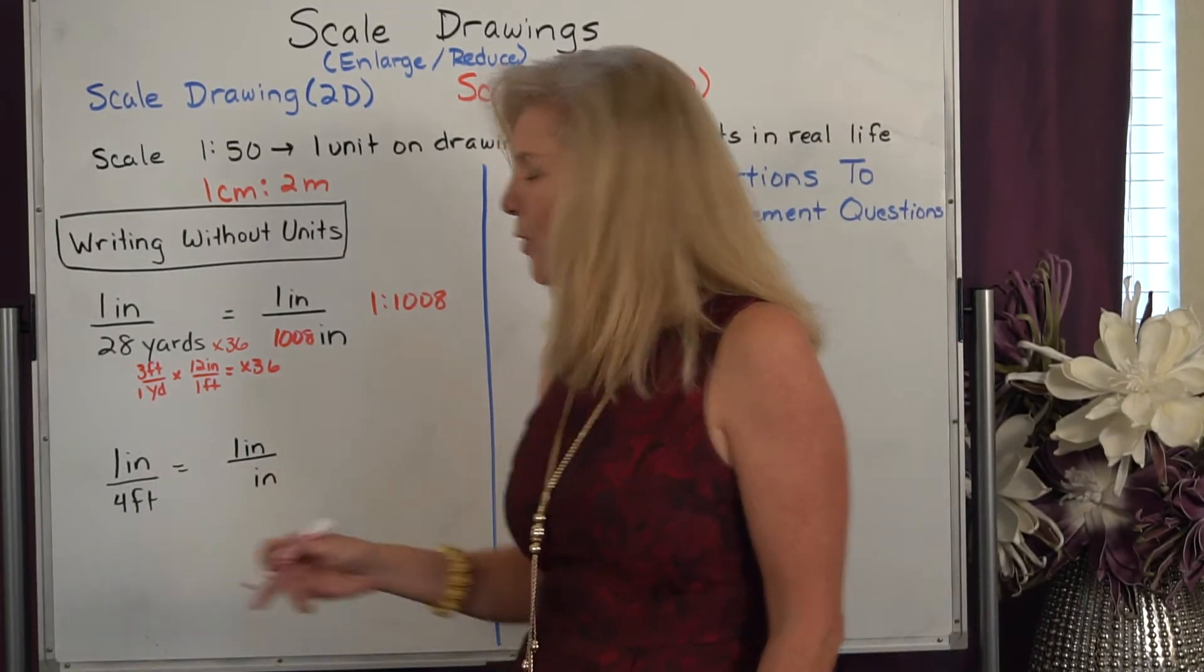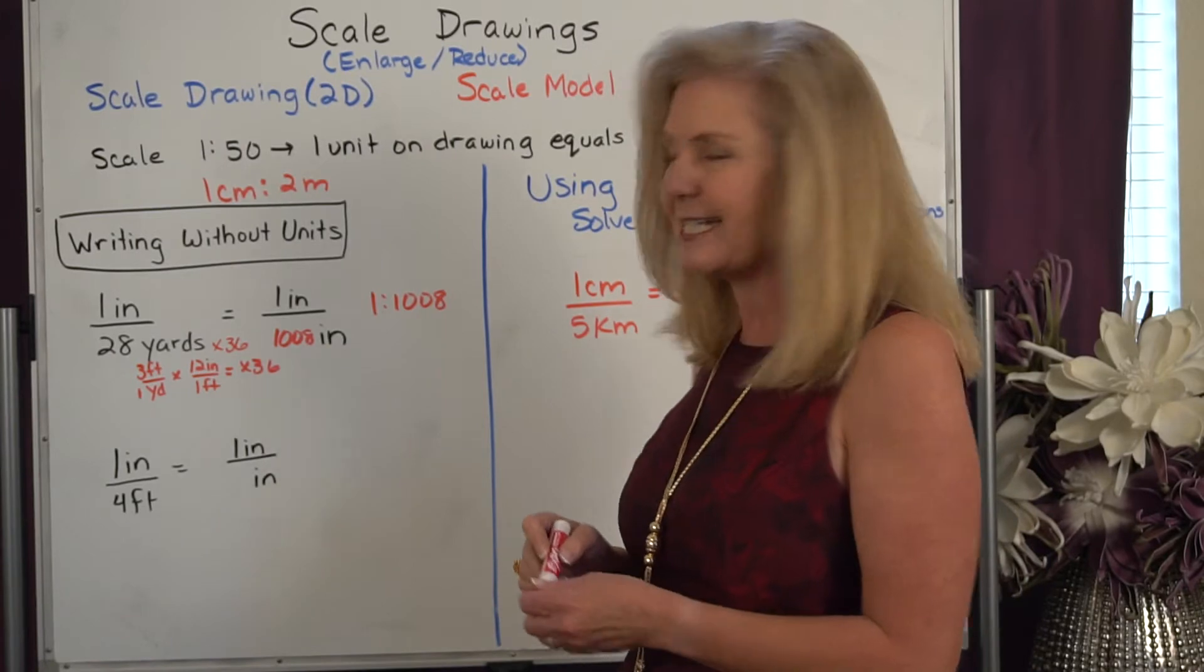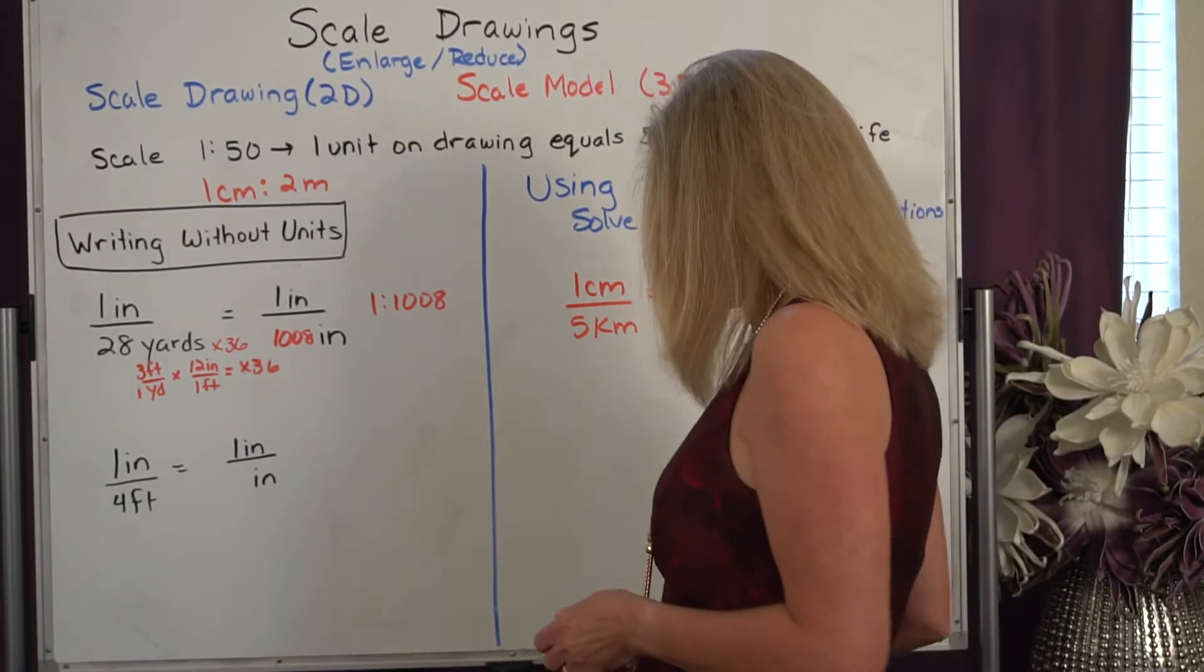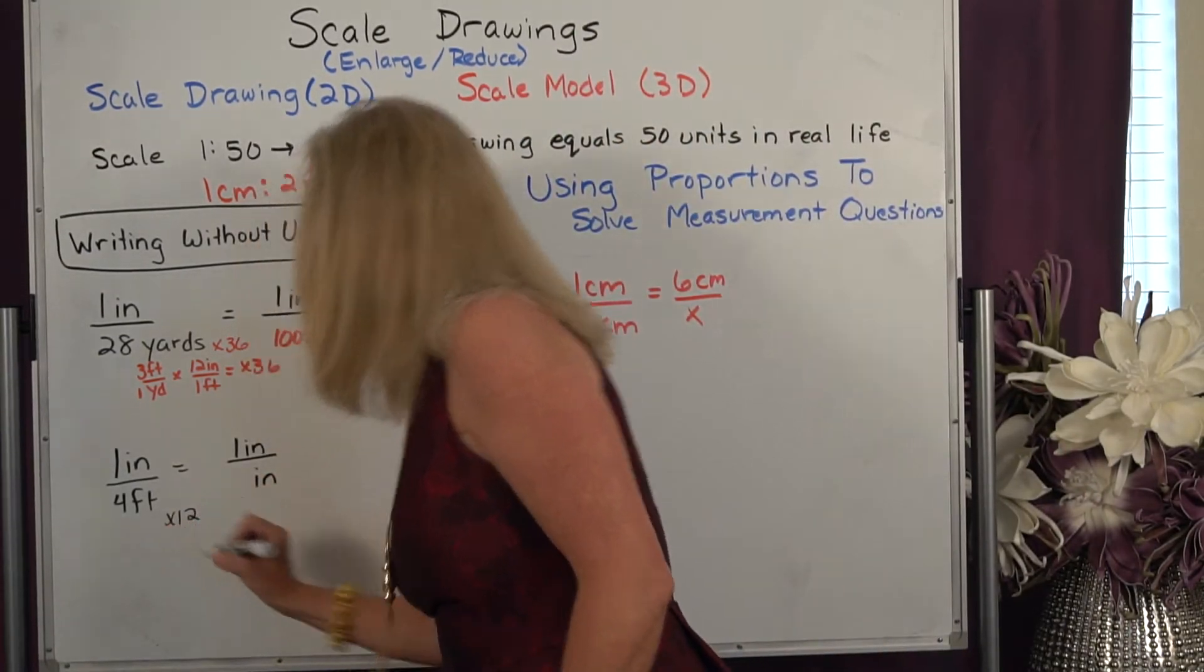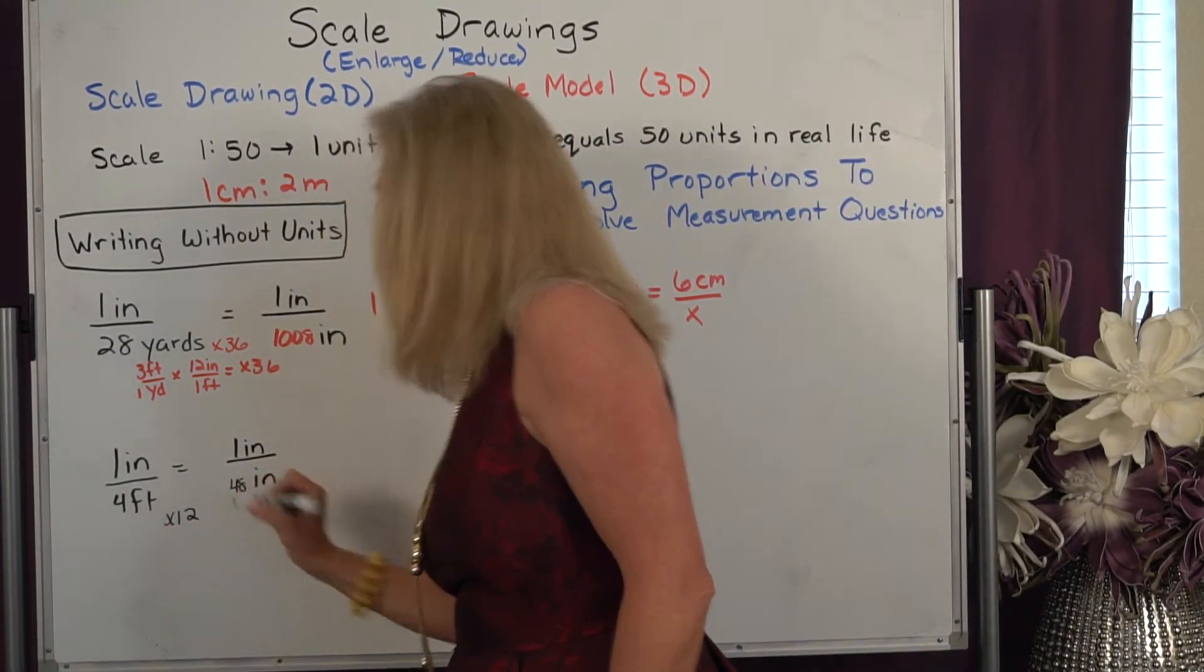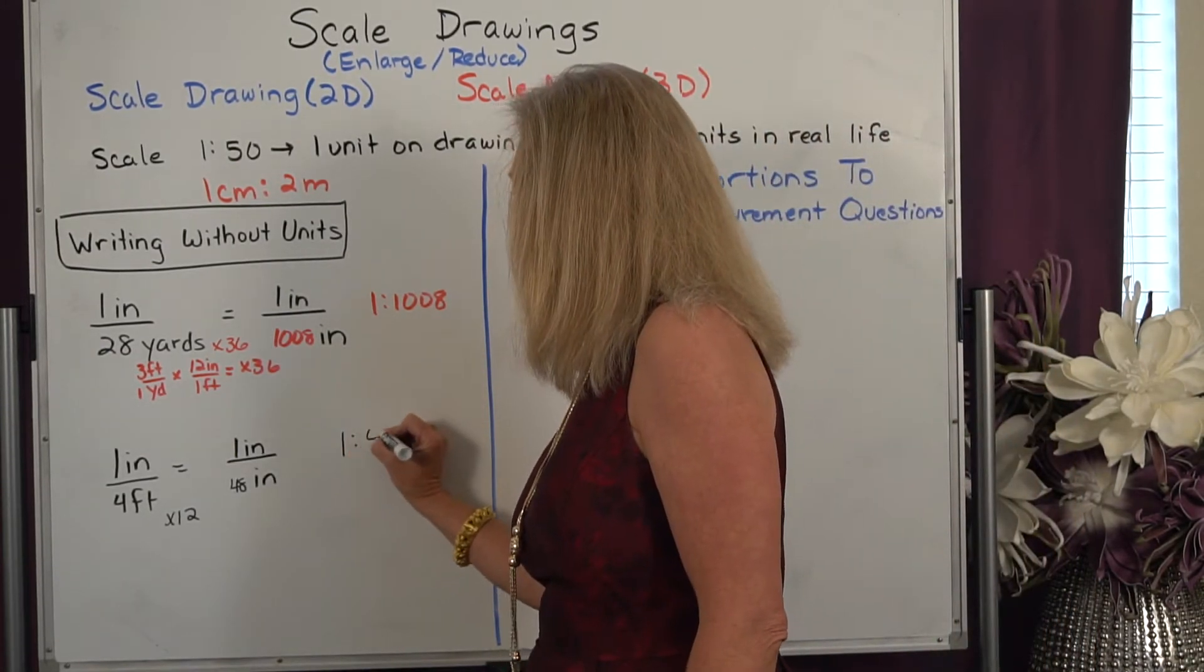Same thing here if I had one inch to four feet and I want to write it without units then I need to change that four feet into inches. For every foot there's 12 inches so I'm going to multiply by 12 and I get 48 inches, so then I can write it as 1 is to 48.